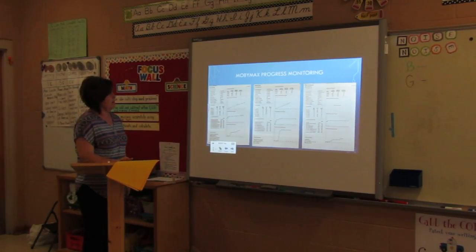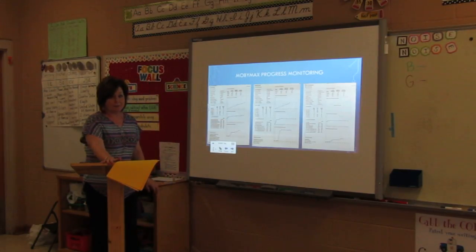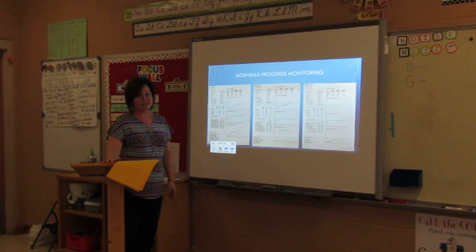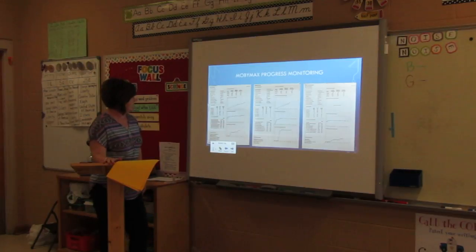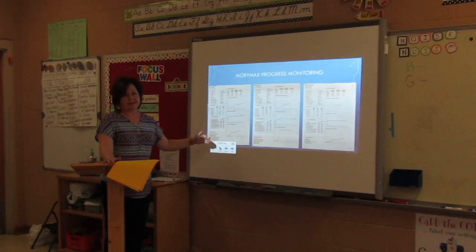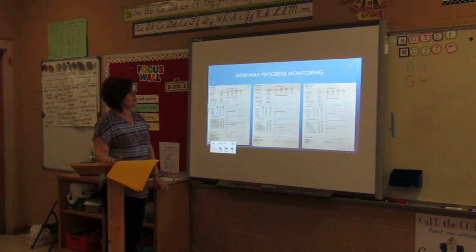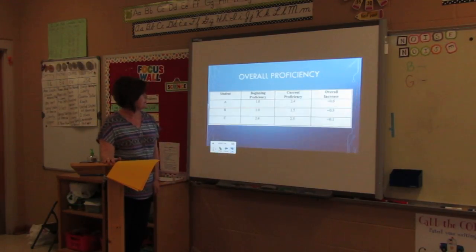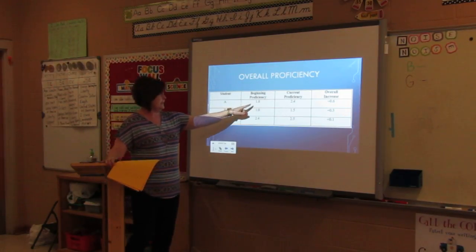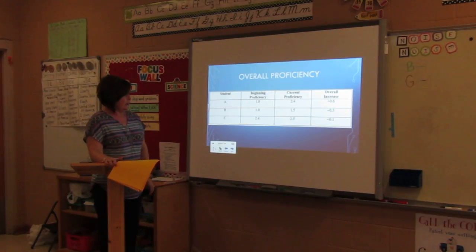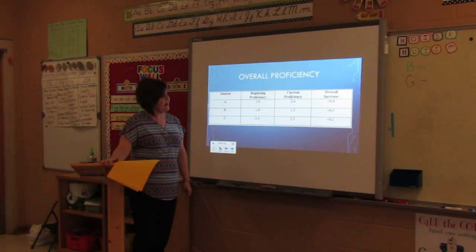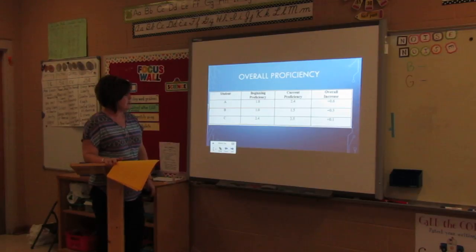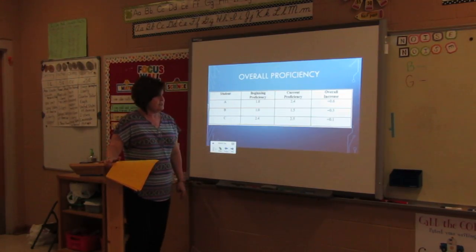This is an example of the progress monitoring reports that MobiMax has available to teachers, which is a great thing because it really breaks down different areas for monitoring. It shows grade level increases, standards that have been passed, lessons that have been completed, and upcoming lessons students will eventually progress to. Each student gets a progress monitoring report printed each week. Student A began MobiMax at a 1.8 proficiency level and increased to 2.4 — an overall increase of 0.6. Student B went from 1.0 to 1.5 — an increase of 0.5. Student C started at 2.4 and increased to 2.5.